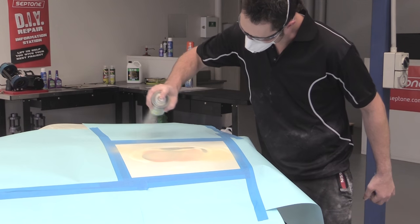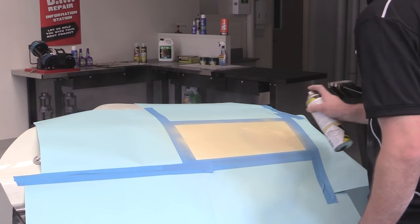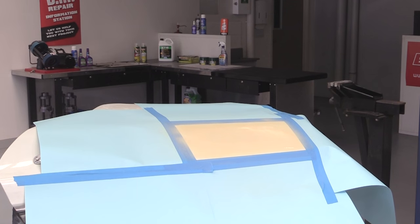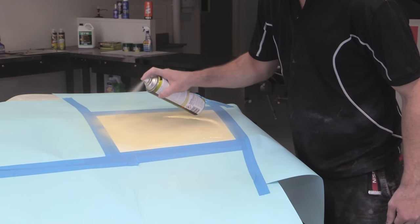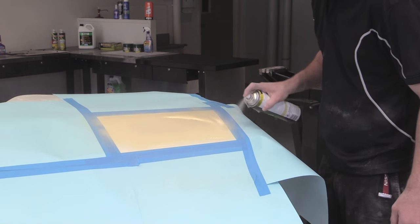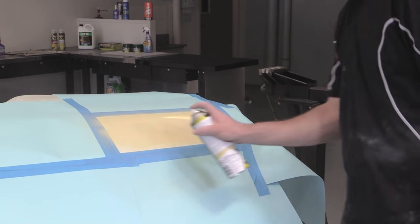Spray three to four coats over the repaired area and up to 50 millimeters under the existing painted area. Leave for five minutes dry time in between each coat. For best results after the final coat, leave to dry for four hours or overnight. Remove paper and masking tape.